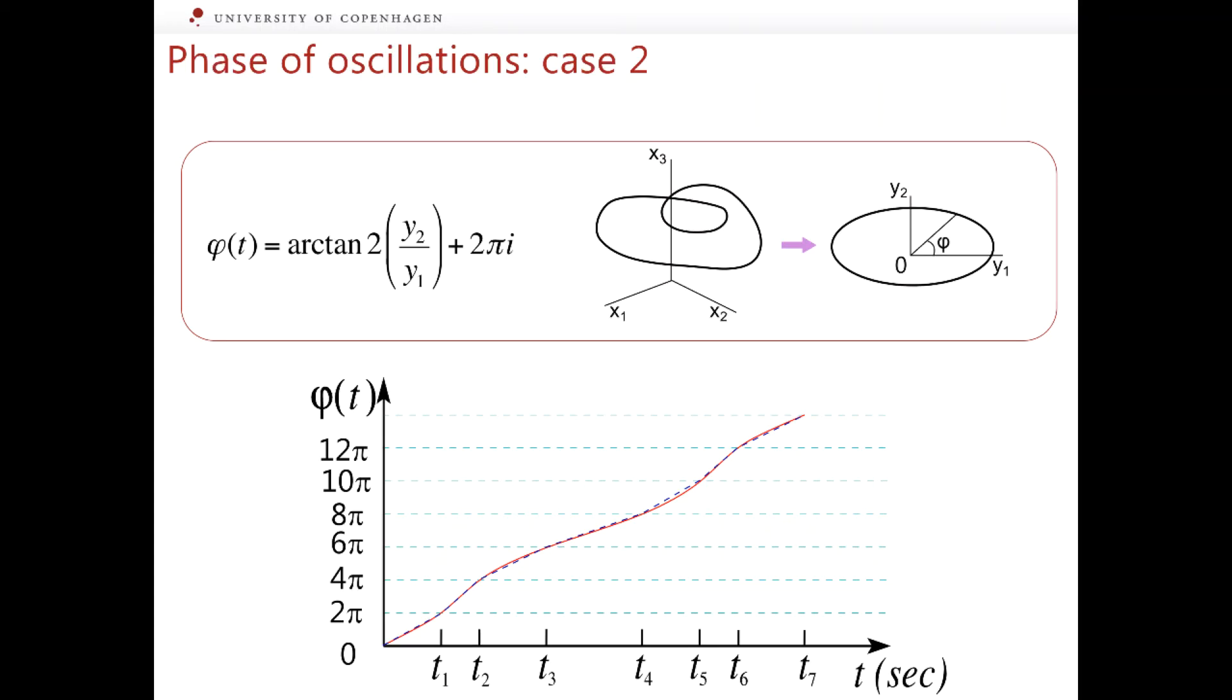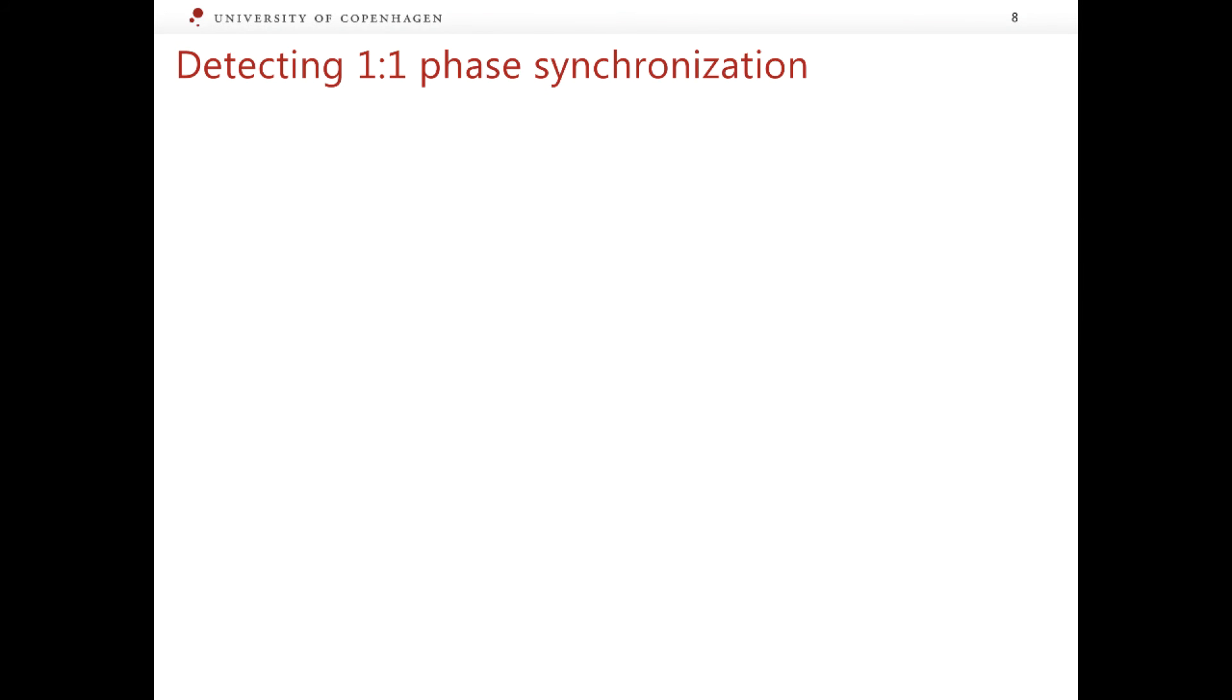Introduction of the phase allows us to characterize synchronization quantitatively. Consider one-to-one synchronization. Suppose we introduced phases φ_1 and φ_2 for both interacting systems with any of the two methods discussed. Now to assess the presence or absence of synchronization we can construct the phase difference Δφ as a simple difference between the two phases. The phase difference changes in time.